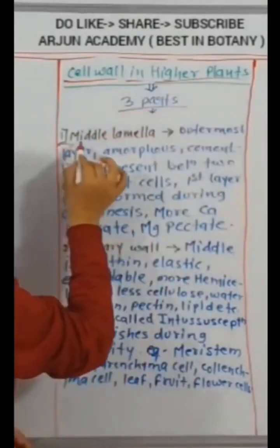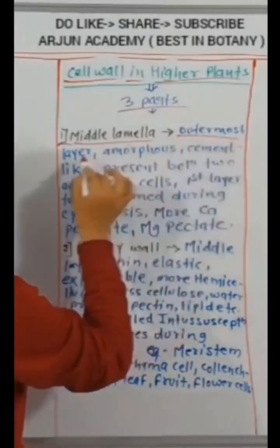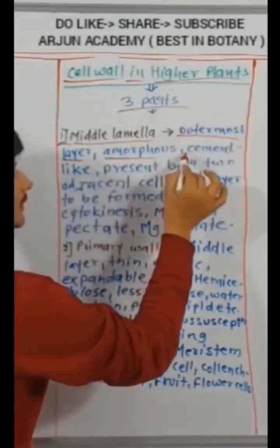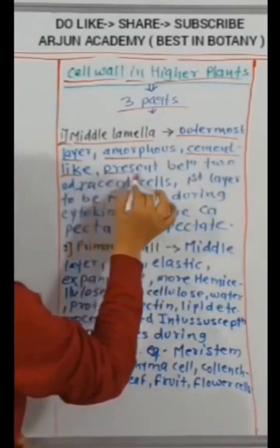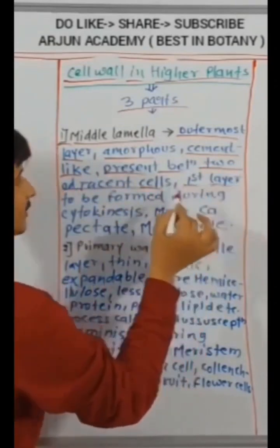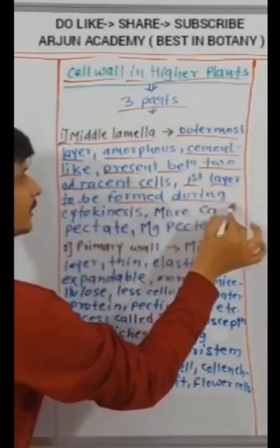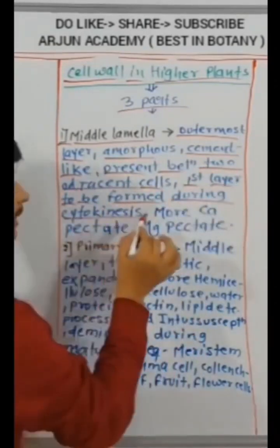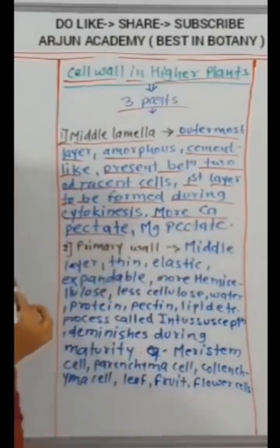First, middle lamella: outermost layer, amorphous, cement-like, present between two adjacent cells. First layer to be formed during cytokinesis.